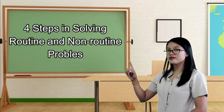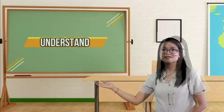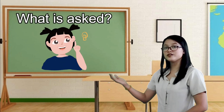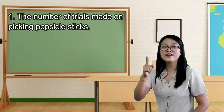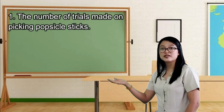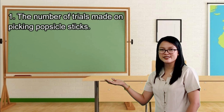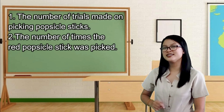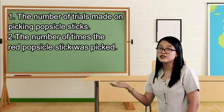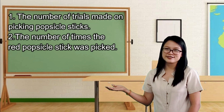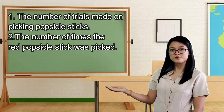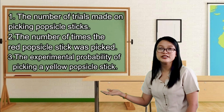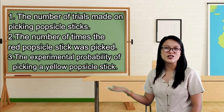Number one, we have to understand. What is asked? Correct! The number of trials made on picking the popsicle sticks. The second one — the number of times the red popsicle stick was picked. And third — the experimental probability of picking a yellow popsicle stick.